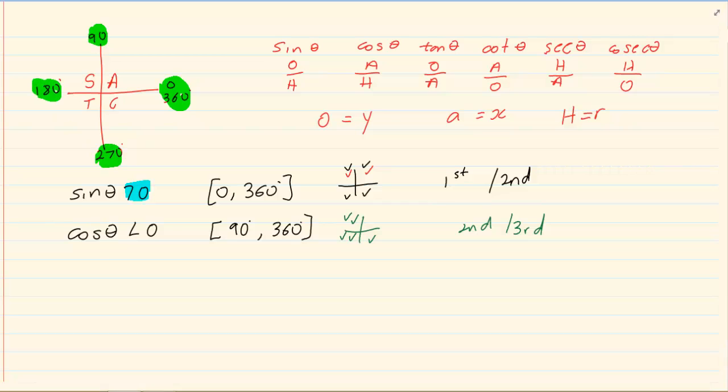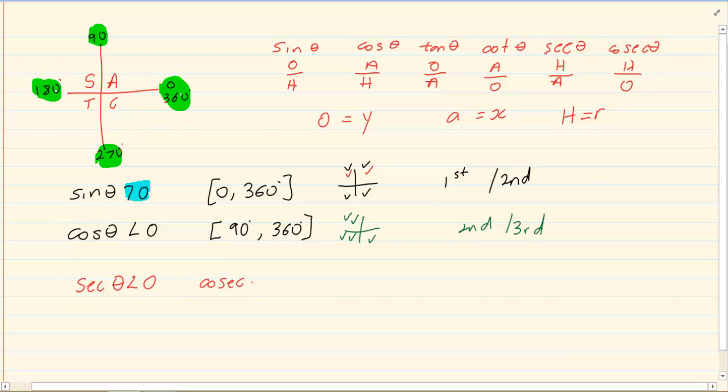Let's try one more. Let's say I am giving you that sec theta is less than 0 and I am giving you that cosec theta is greater than 0.